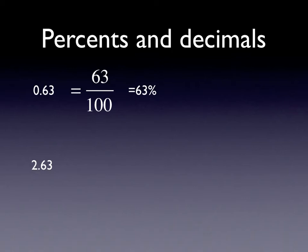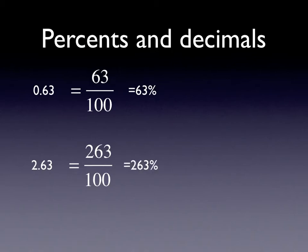We can have decimals that are larger than one — for example, 2.63. We can convert those into improper fractions that have denominators of a hundred: two hundred and sixty-three hundredths, which is the same thing as two hundred and sixty-three percent. It's okay to have percents that are larger than a hundred percent. That just means that we have more than one whole.